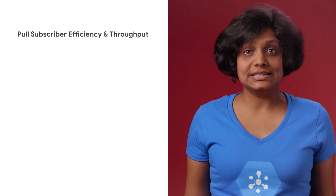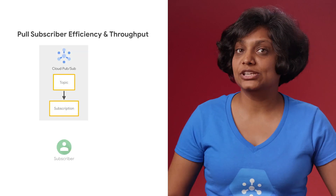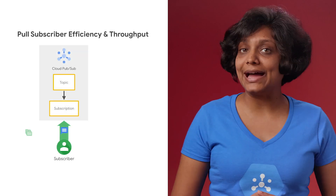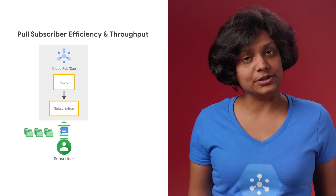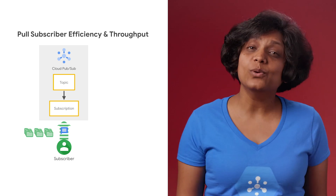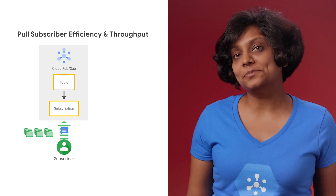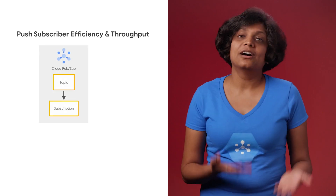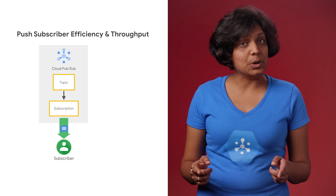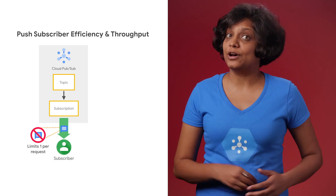When it comes to efficiency and throughput, the pull mechanism achieves high throughput per CPU and bandwidth by allowing batch delivery, processing, and acknowledgments. The downside is that you must always have an application running to keep getting messages from PubSub. With push delivery, you can take advantage of the scale-to-zero serverless patterns supported by Cloud Functions, Cloud Run, or App Engine. This is useful when your request rate is low or very uneven. The push mechanism delivers one message per request and limits the maximum number of outstanding messages.